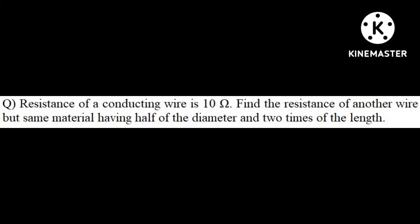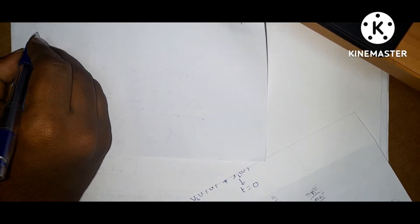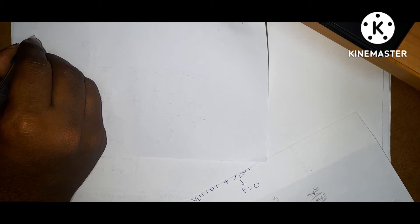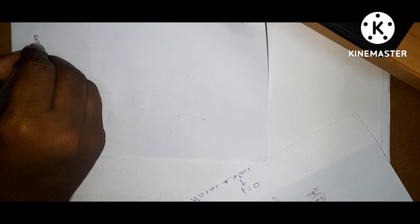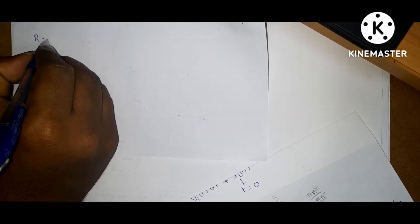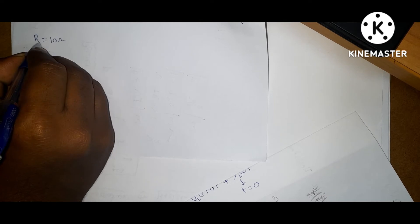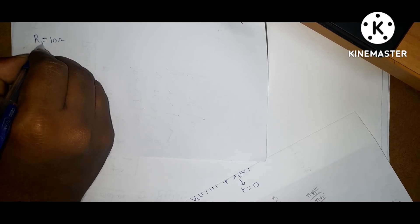Next question: the resistance of a conducting wire A is 10 ohms. Find the resistance of another wire of the same material having half the diameter and two times the length. Write down the given data: resistance of wire A is 10 ohms, let it be R1.